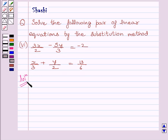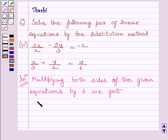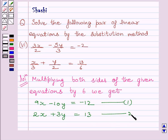Multiplying both sides of the given equations by 6 we get 9x minus 10y is equal to minus 12 and the other equation would be 2x plus 3y is equal to 13. Let us name these two equations as equation 1 and equation 2.